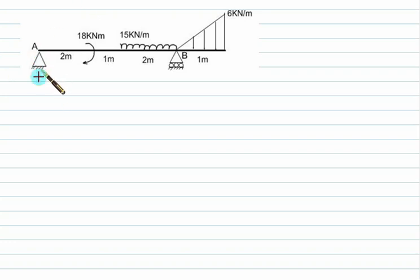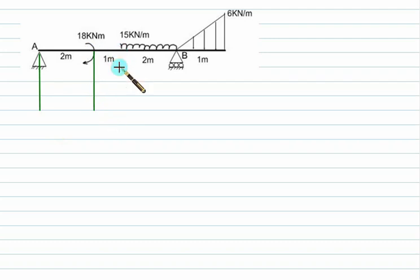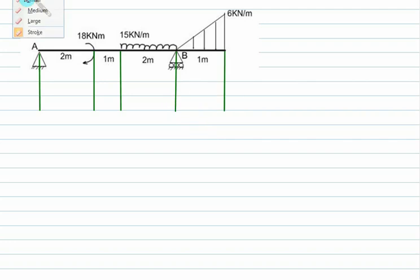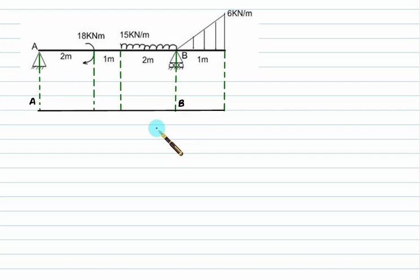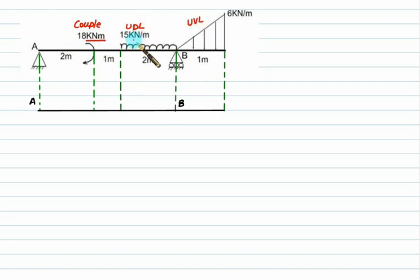Step by step we are increasing the depth of problem, making it a little more complicated. This time I added one extra load equal to a couple. We have one UDL and one UVL, which is a triangular load. At point A we have a fixed support and at point B we have a roller support. This couple is acting in a clockwise direction, so it will be taken as positive. UDL and UVL have units of kilonewton per meter, and the couple has units of kilonewton meter.